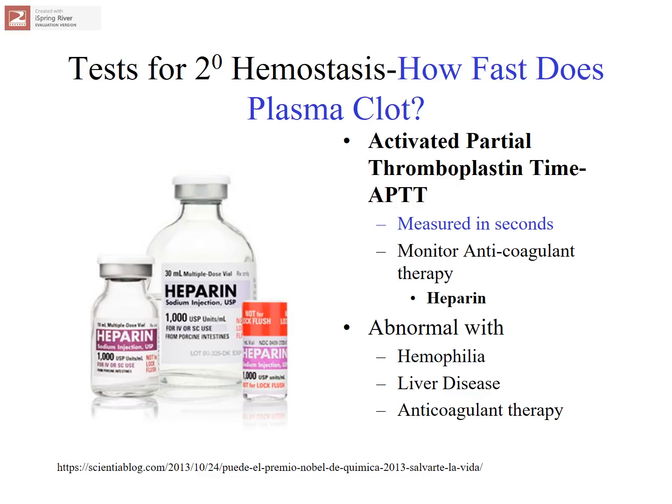If people have other abnormalities impacting their circulating coagulation factors — such as hemophilia (a factor VIII deficiency), liver disease, or anticoagulant therapy — you will see elevations or lengthening of the APTT in seconds. So the length of time for the blood to clot is increased.